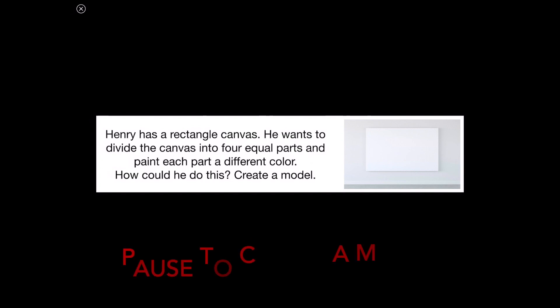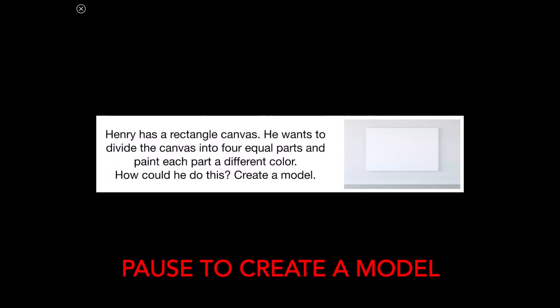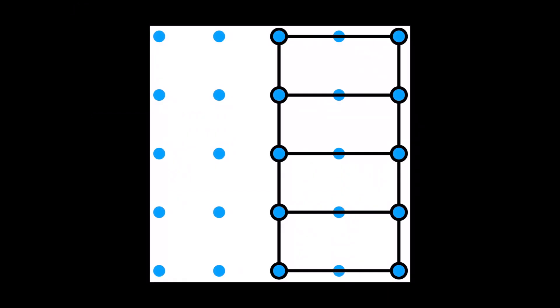Our next problem is that Henry has a rectangle canvas. He wants to divide the canvas into four equal parts. How could he do this? You can pause now to create a model. Here are some examples of how Henry could partition the rectangular canvas into four equal parts.